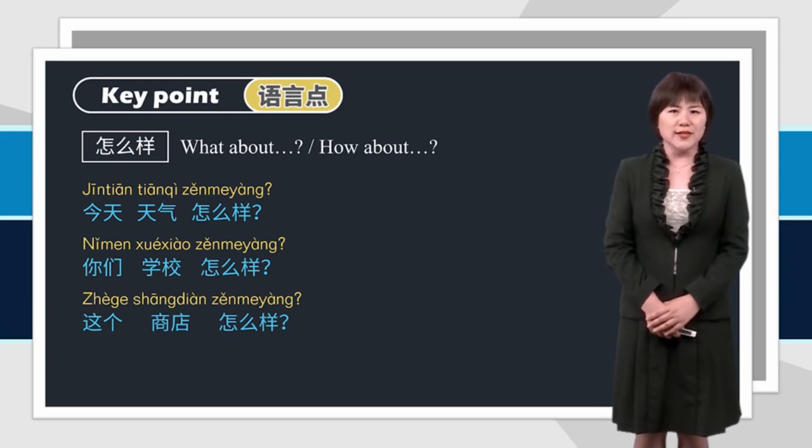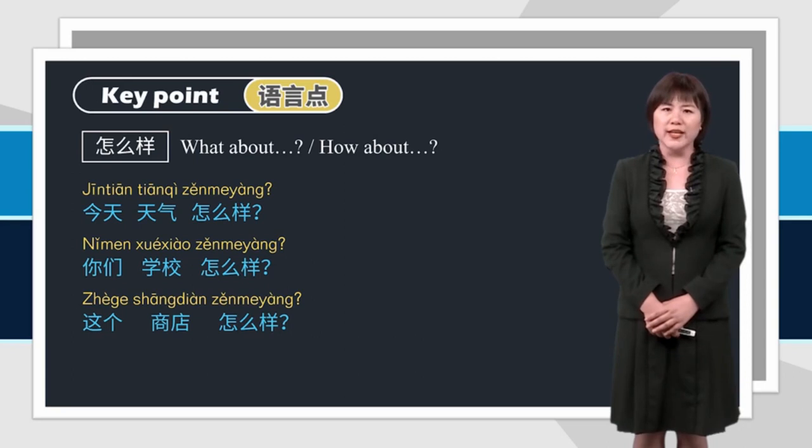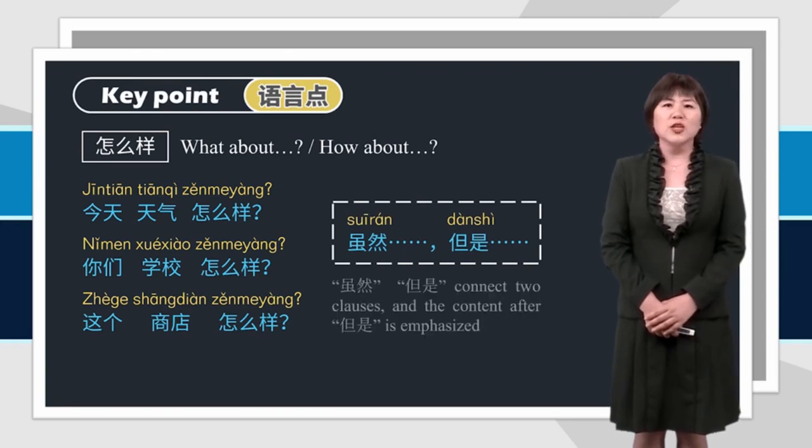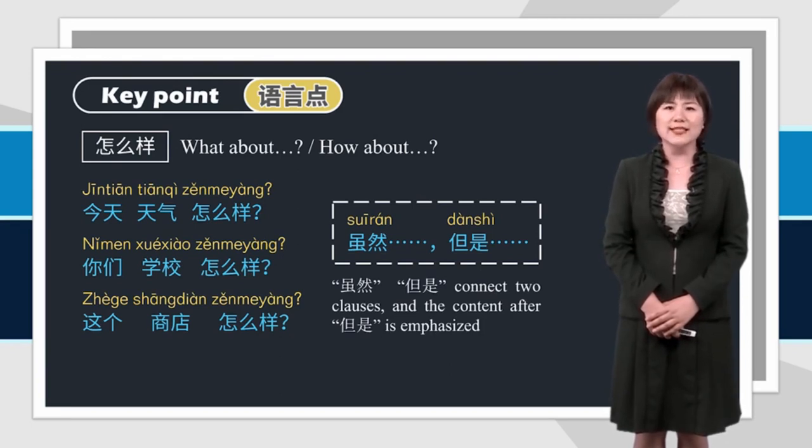Answering this kind of question, if you want to say two aspects on the contrary, we can use the structure 虽然, 但是. Do you still remember? 虽然, 但是 connect two clauses, and the content after 但是 is emphasized.